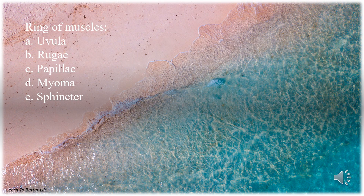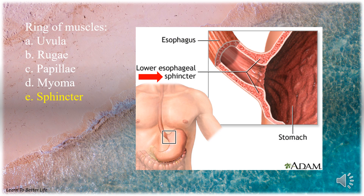Ring of muscles. A. Uvula. B. Rugae. C. Papillae. D. Myoma. E. Sphincter. The answer is E. Sphincter.